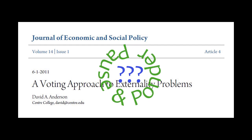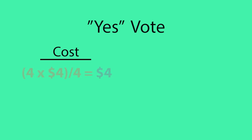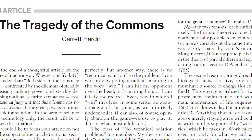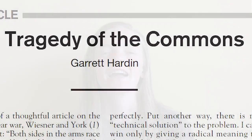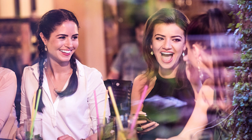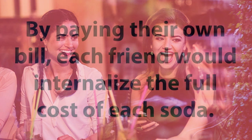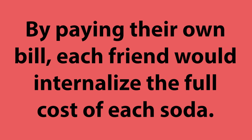How could a voting solution be applied? Someone could say, let's all vote on whether to have another round. Friends would know that a yes vote would cost them $4 — their share of the $16 cost of four more drinks — so each friend would only vote yes if another drink were worth at least $4. What would Garrett Hardin suggest? He'd say, let's each pay for our own drink. By privatizing the decision, each friend would internalize the full cost of ordering another soda and make the socially optimal decision. Those are some approaches to problems with externalities — the best solution depends on the situation. If you're going out with friends and someone suggests splitting the check, a good approach is to just say no.